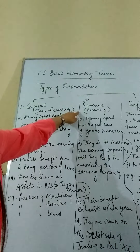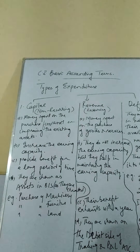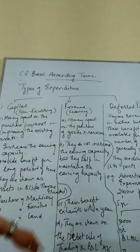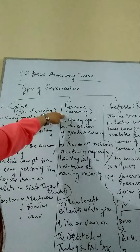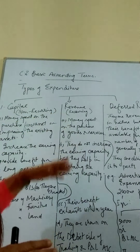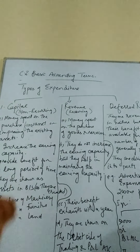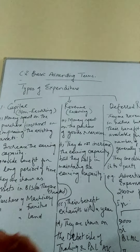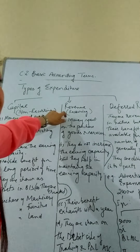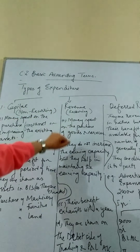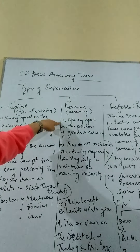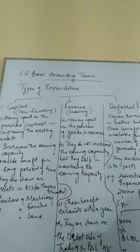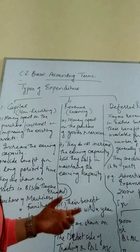Moving on to the second category, which is also very important — revenue expenditure. These are of recurring nature; they will happen repeatedly. You will not spend once on raw material — once raw material is processed and sold, you have to purchase again. So these are called revenue expenditures because they are recurring in nature. Money spent on the purchase of goods and services can be referred to as revenue expenditure, as it happens in the day-to-day course of business.